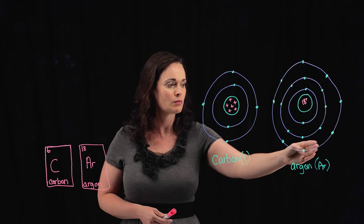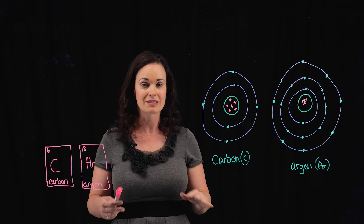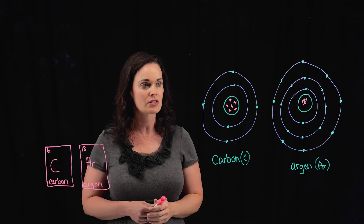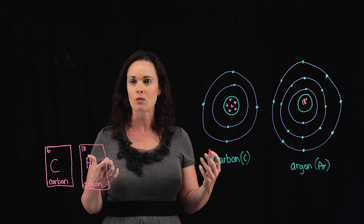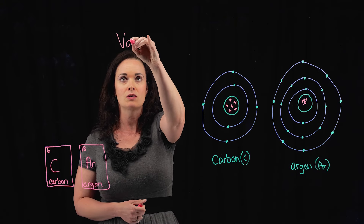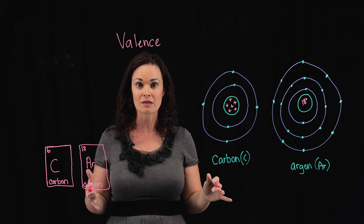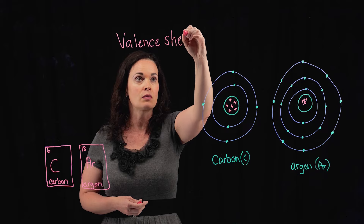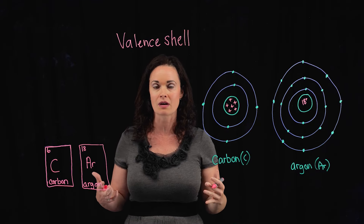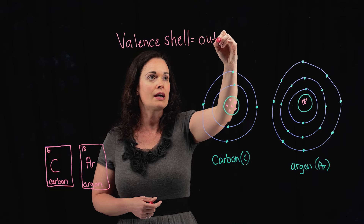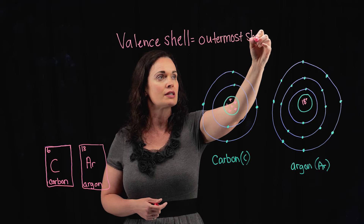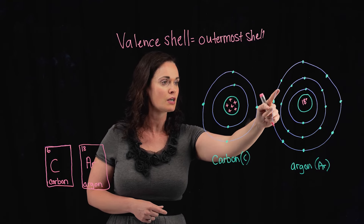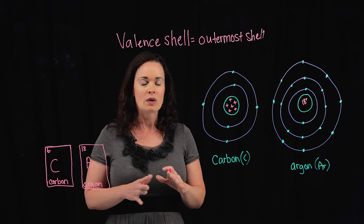Compare carbon and argon for a moment. Argon has an outermost shell that's full; carbon does not — it's actually missing four electrons from being full in its second shell. The outermost shell is known as the valence shell — that's a term you're definitely going to want to know. Whether it's the first shell as with hydrogen and helium, the second shell as with carbon, or the third as with argon, that outermost shell is the valence shell.